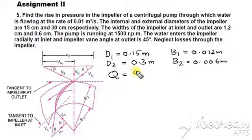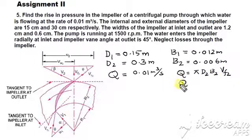Q is 0.01 meter cube per second, already in SI units, so you may not do any conversion. And as you know, Q is equal to π D2 B2 VF2, and also Q is equal to π D1 B1 VF1.